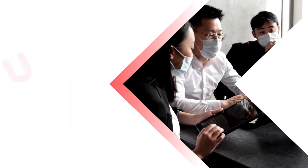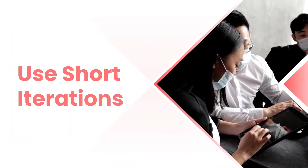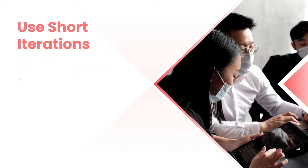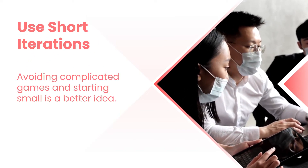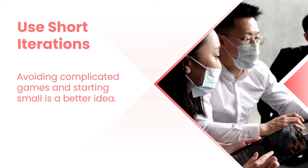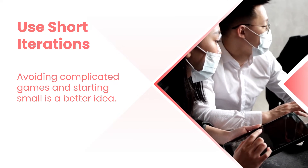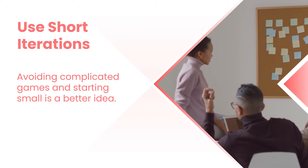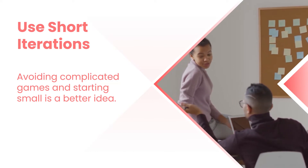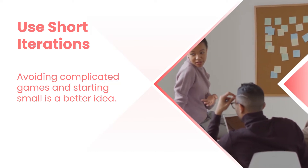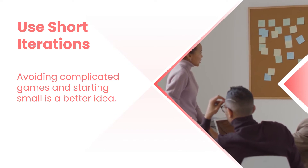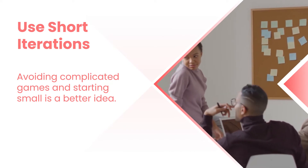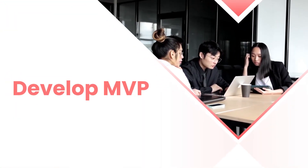The third consideration is to use short iterations. Even the most complicated games start small and build upon their ideas. Once you have an idea in place, it's much easier to see what works and what doesn't in mechanics, arts, and story. By starting small, you can get something out there quickly to test your ideas without having too much invested in them at once. The fourth consideration is to develop an MVP first.